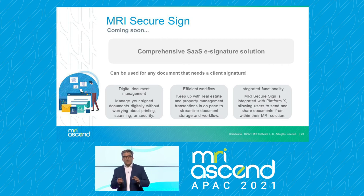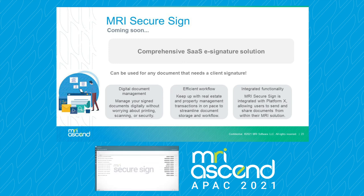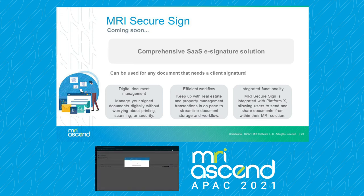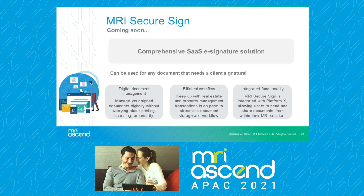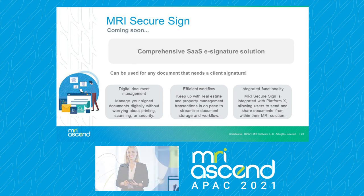Frustrated by burdening your customers to print, sign, scan and send physical documents? Upload to MRI SecureSign to manage all of your documents digitally without worrying about printing, scanning or security. Need to get multiple signatures on a document? No problem — create efficient workflows for your agreements with simple drag-and-drop features. Send out your contracts quickly via email from within SecureSign for efficiency and ease of use. The intuitive process makes it easy for any recipient to sign and complete. Signatures can be made from anywhere, on any device. Help create business continuity, client satisfaction, and support remote work with MRI SecureSign.